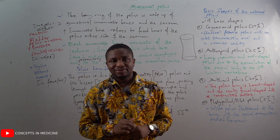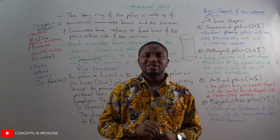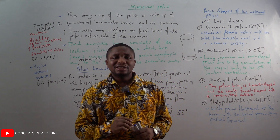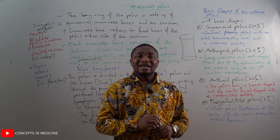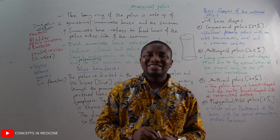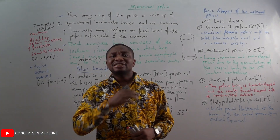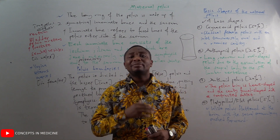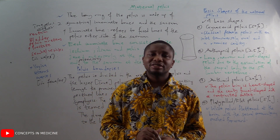The android pelvis has a heart-shaped pelvic inlet and a funnel-shaped cavity with a contracted outlet. It is found in about 20 percent of the female population.